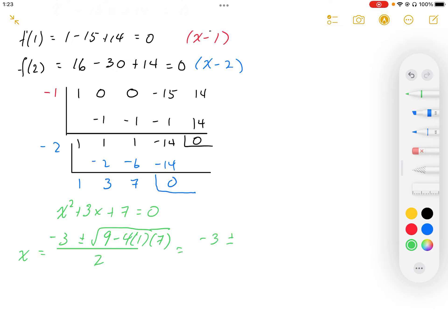I end up with negative 3. My discriminant ends up being equal to negative 19.